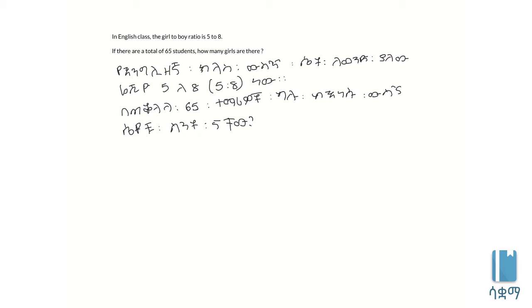In English class, the same ratio is 5 to 8. If there are a total of 60 students, how many girls are in English class?